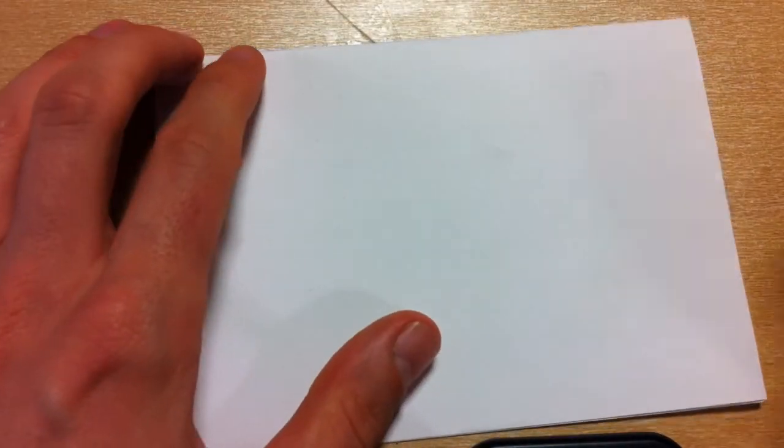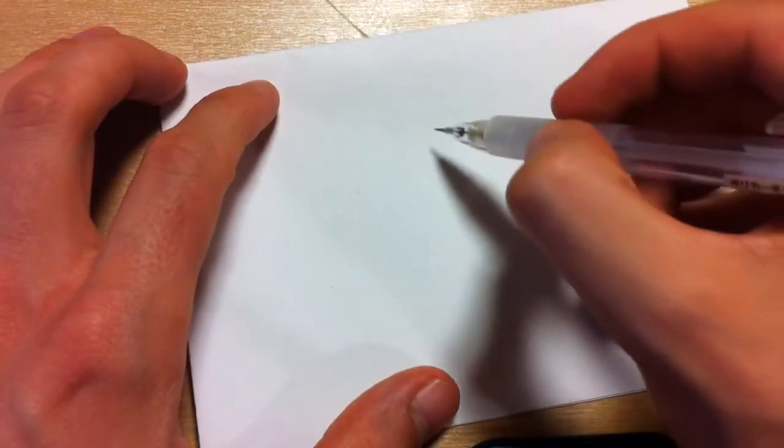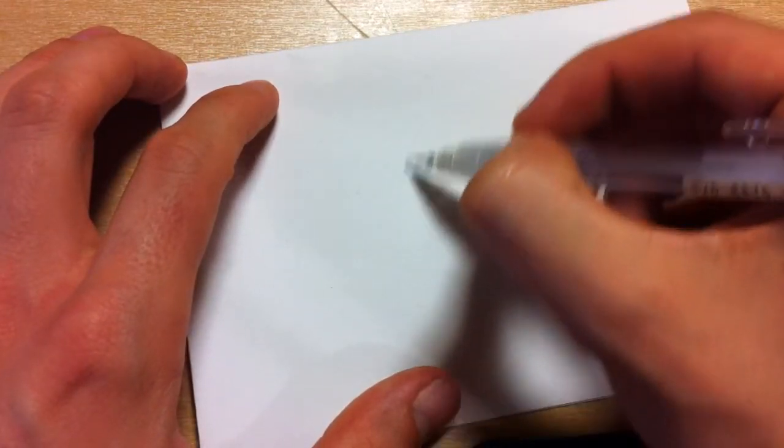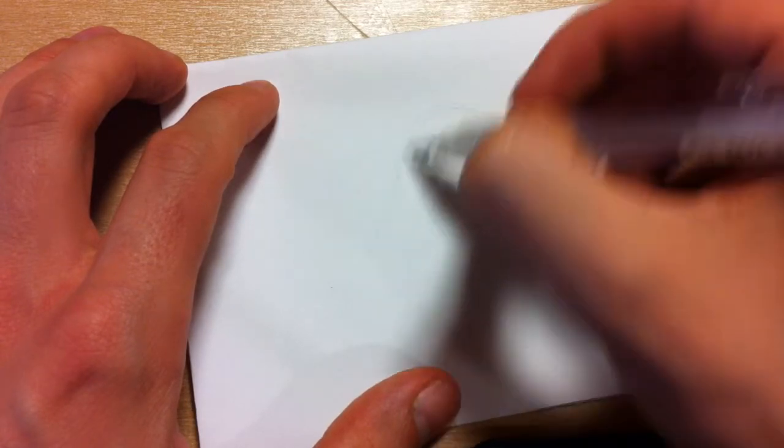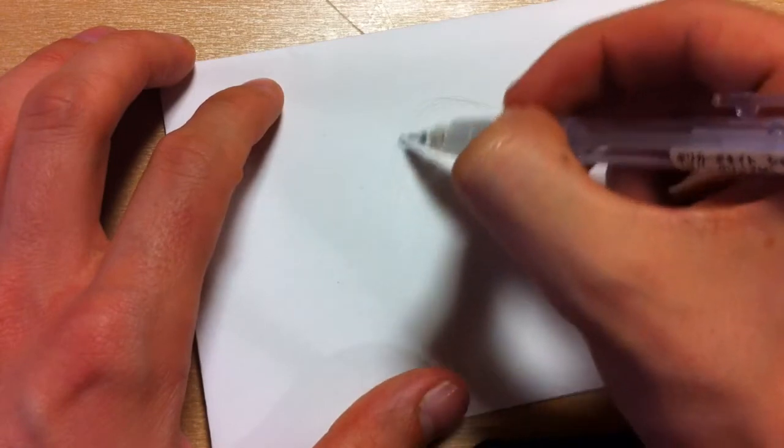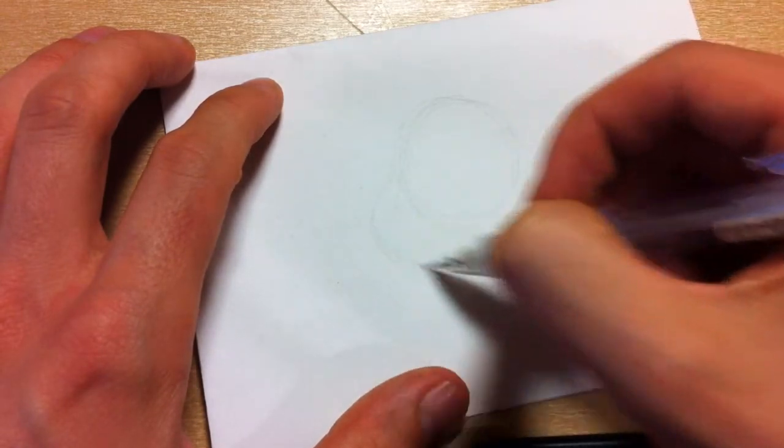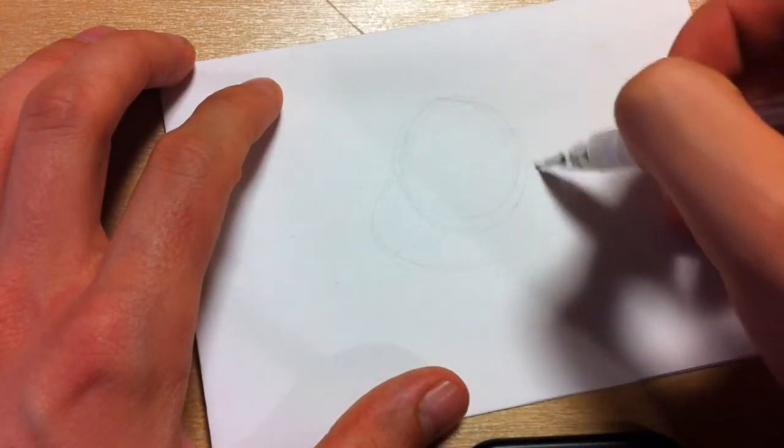But let me try that again. And I'm gonna change the pencil. No I'm not. Okay, so we start off with, I don't know whether it'd be easy to draw a circle first, maybe? Yep. And then, what we need is this kind of shape.